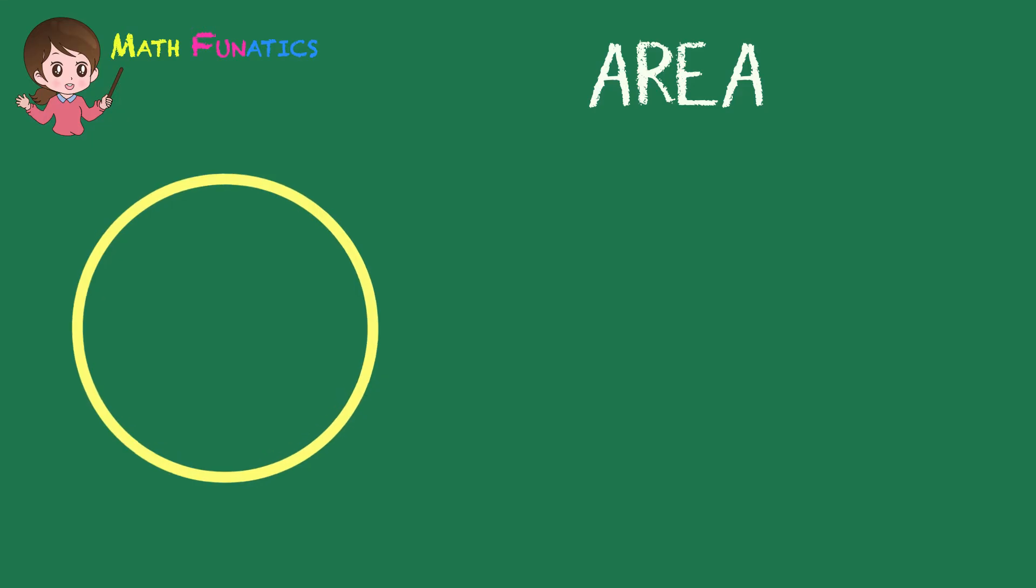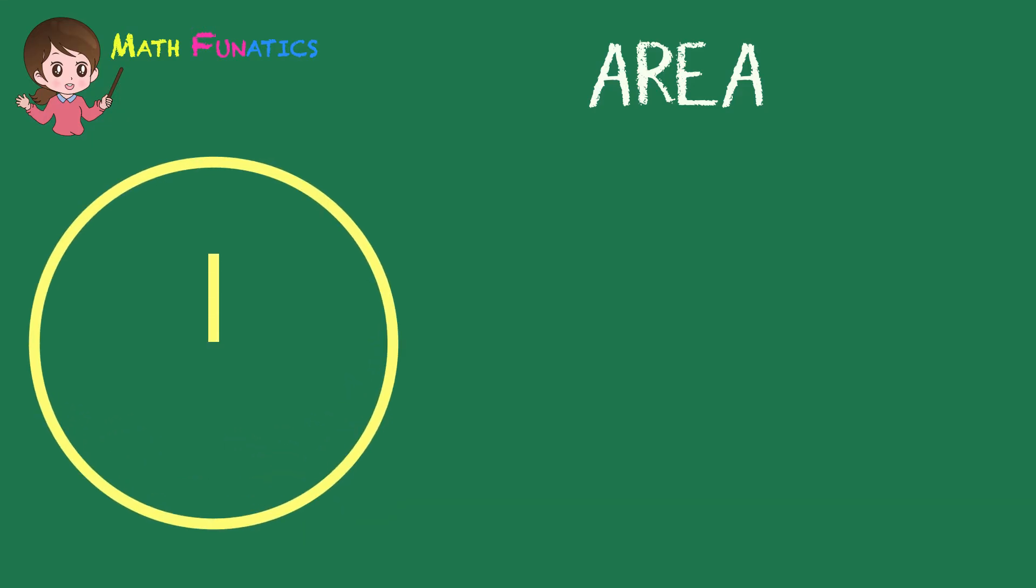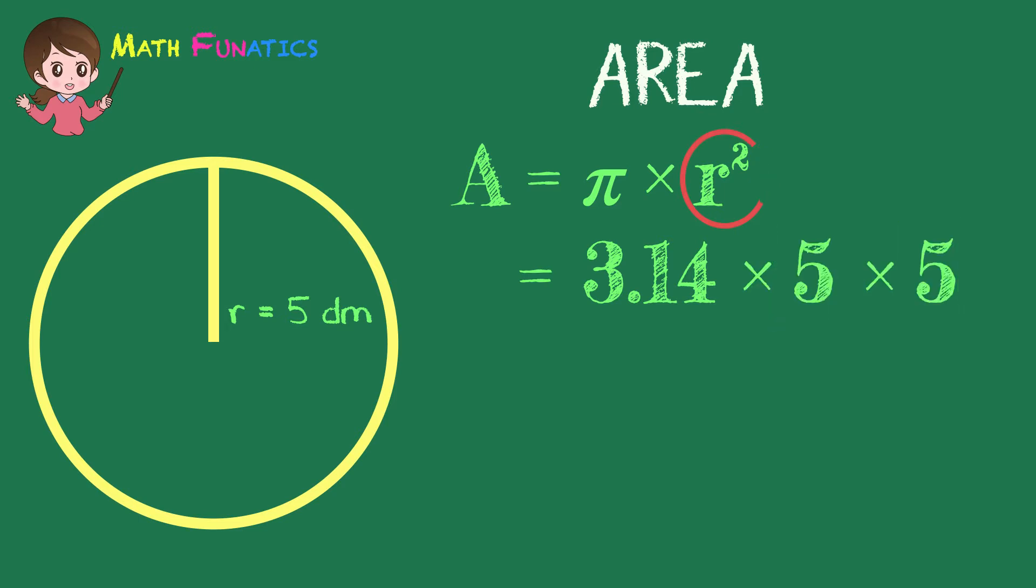Let's have some examples. Let us compute for the area of a circle if its radius is equal to 5 decimeters. As I've mentioned earlier, we use the formula A equals pi times the square of r. Simply substitute the pi by 3.14 and the square of r by 5 times 5.